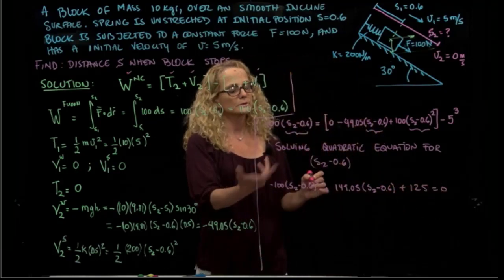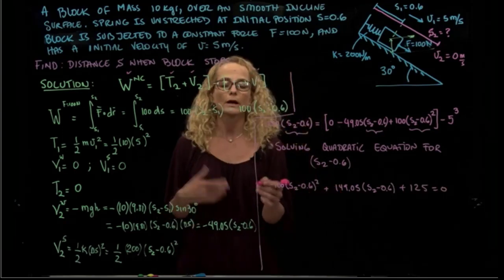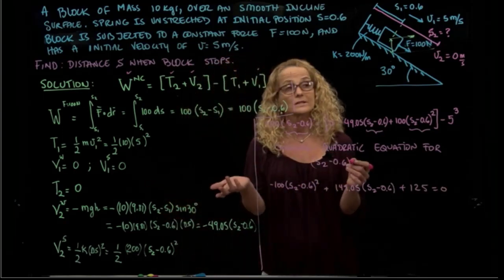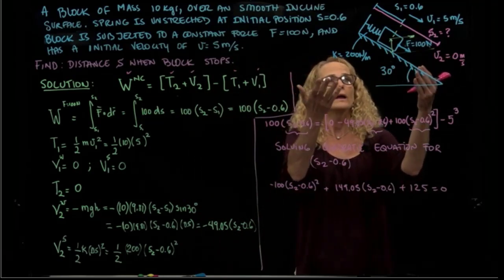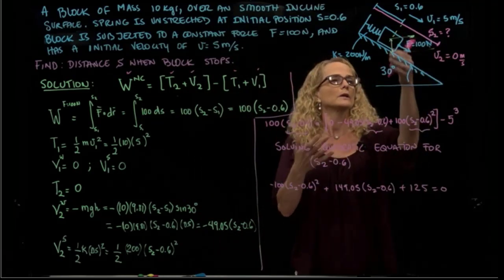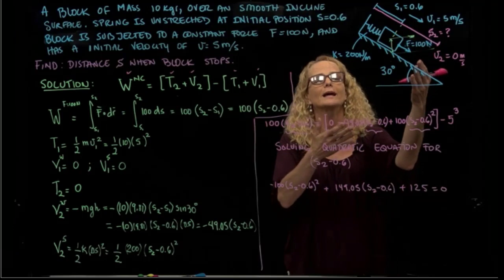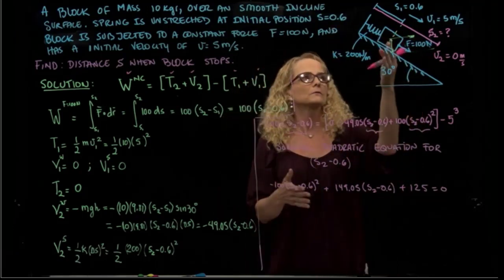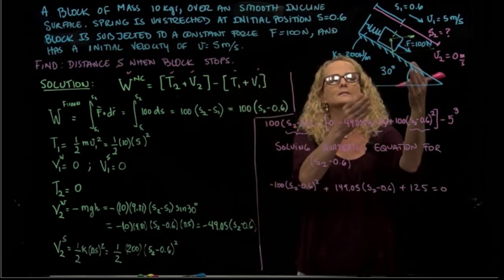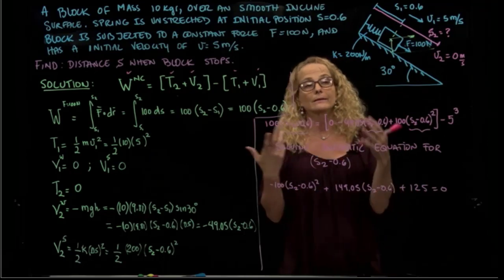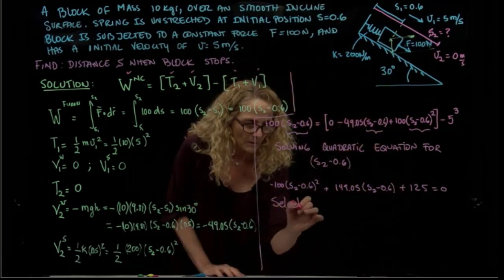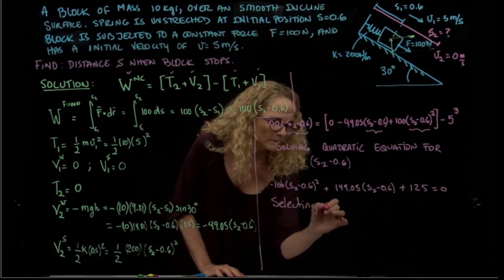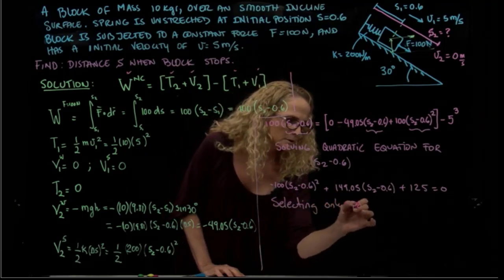This equation gives me two solutions. I will choose the positive solution, because the stretching is, there is no way, there are no forces pushing the spring upwards. If I'm going negative, I need the positive solution. I get that S2 minus 0.6 equals 2.09 meters. That means that S2 equals 2.69 meters.